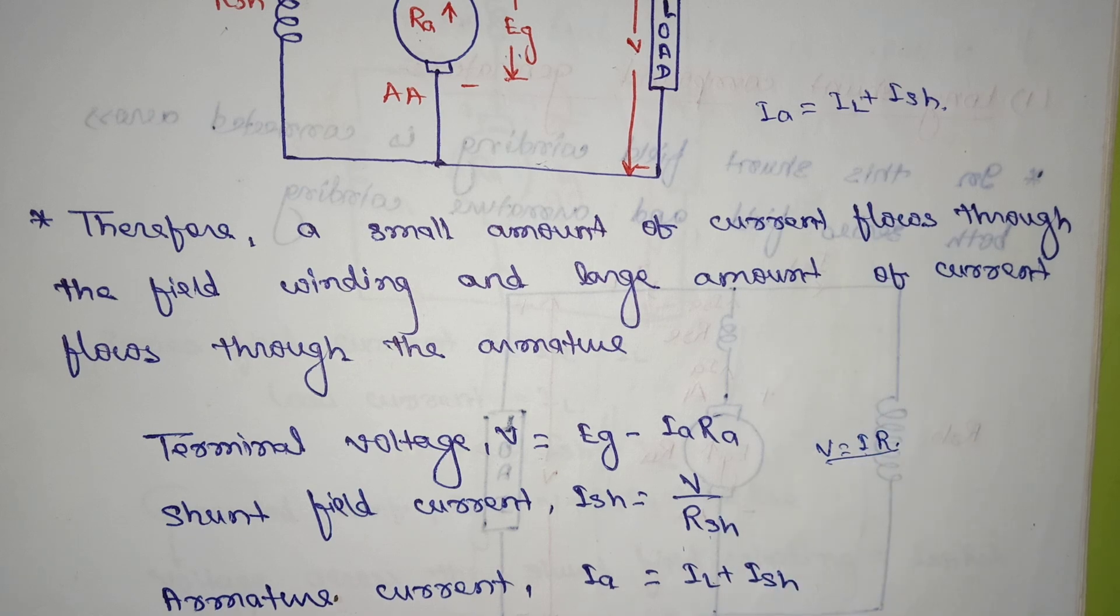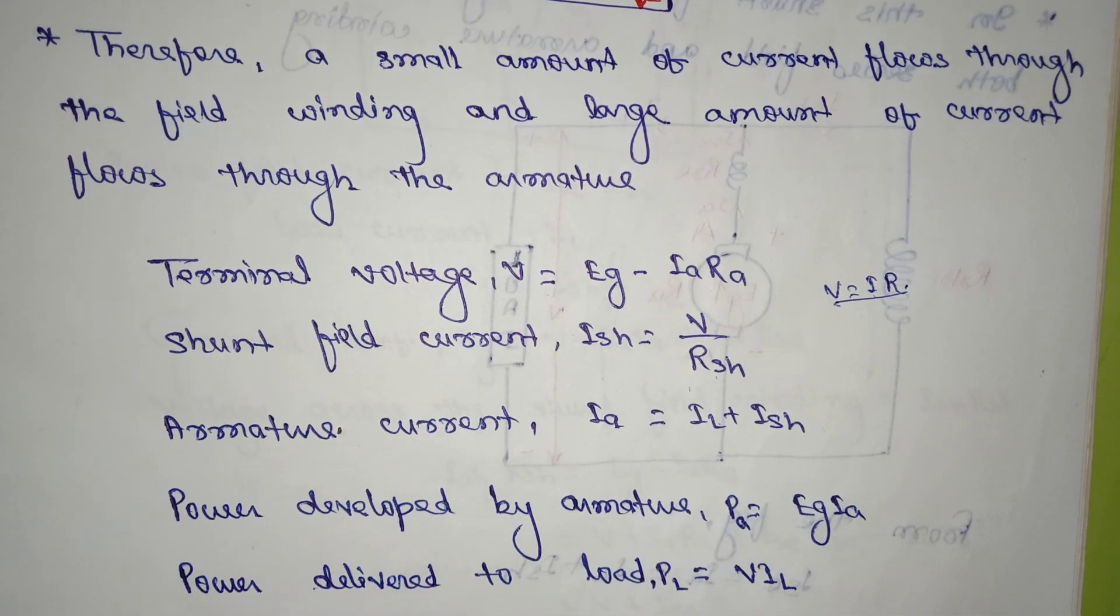Power developed by the armature, Pa, is equal to Eg Ia. Power delivered to the load, Pl, is equal to V Il. This is about the shunt generator. Thank you.